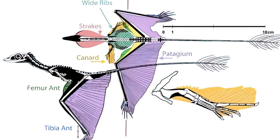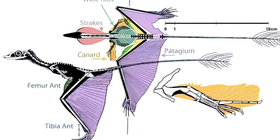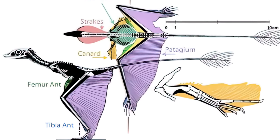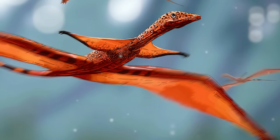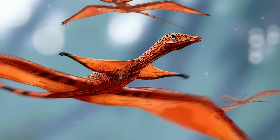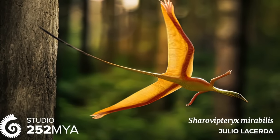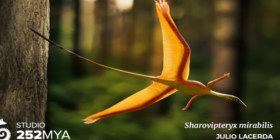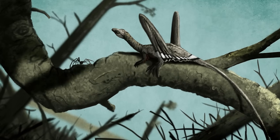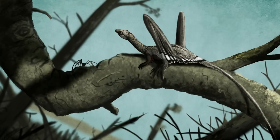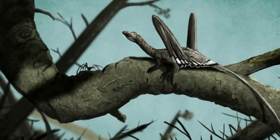One of the most striking features of Sharovipteryx is its extremely elongated hind limbs, which are much longer than its forelimbs. This adaptation is thought to have allowed it to generate lift and glide through the air. The tail could have been bent up and down to create drag, slowing down its movements from tree to tree. The dietary preferences of Sharovipteryx remain uncertain, but it was likely an insectivore, preying on small arthropods.